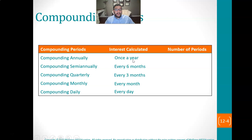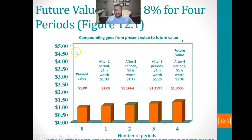When something compounds once a year, we have to ask how many years. Annually is once a year, semi-annually is twice, quarterly is four times, daily is every day. But this all depends upon N — the total number of periods — which depends on how many years we're talking about. This is how many times a year, but then we look at how many years we're dealing with.